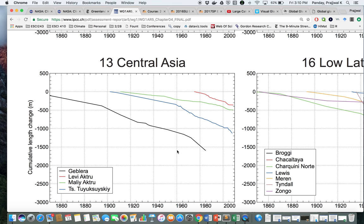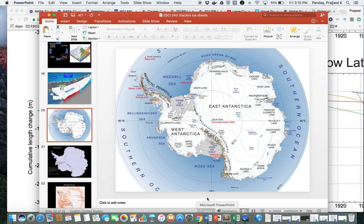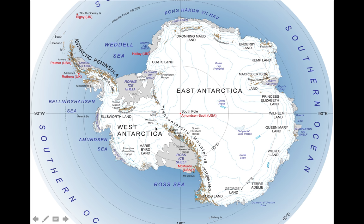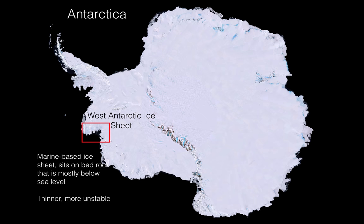This is significant because we are losing glacier ice that eventually ends up as meltwater in the ocean. Antarctica is one of the continents where most of the Earth's fresh water is locked up — 97% of all fresh water is locked up as ice in Antarctica. The West Antarctic Ice Sheet is the more vulnerable portion of Antarctica, with marine-based ice sheets sitting on bedrock below sea level, making it thinner and more unstable.